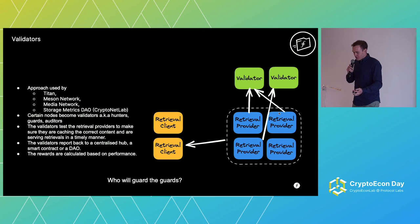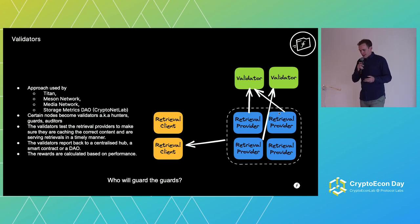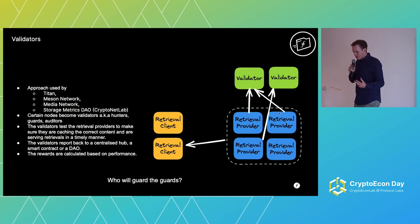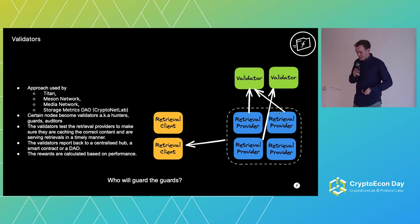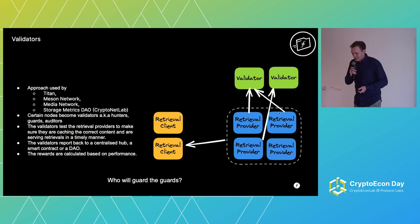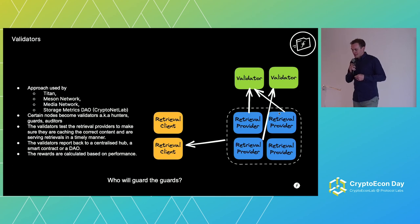There's also another approach that many teams have reached for — Titan, Meson, Media, and the CryptoNet Lab with the Retrievability Oracle DAO — where validator nodes (also known as hunters, guards, auditors, or referees) make retrievals against retrieval providers, testing that they are serving what they should be serving, and reporting back to a centralized hub, smart contract, or DAO to penalize or reward nodes based on performance. Then it's the old question of who will guard the guards. We saw Irene describe how they're going to address that as part of a DAO, but different attack vectors still come up in the system.